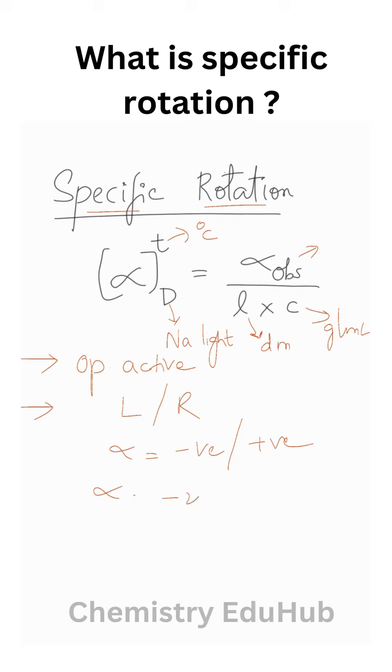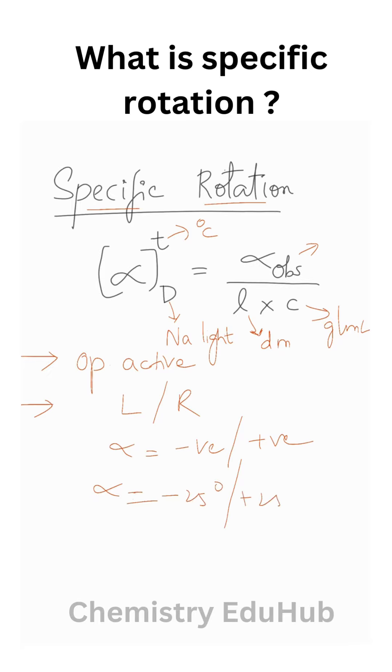For example, alpha can be minus 25 degrees or plus 25 degrees.